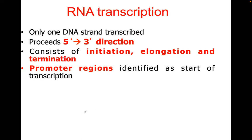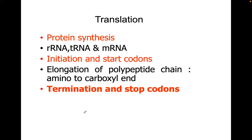Translation is where protein synthesis occurs. Translation involves all three RNAs: mRNA, tRNA, and ribosomal RNA. Translation is characterized by initiation and start codons. The initiation codon is AUG — a codon is comprised of three bases.